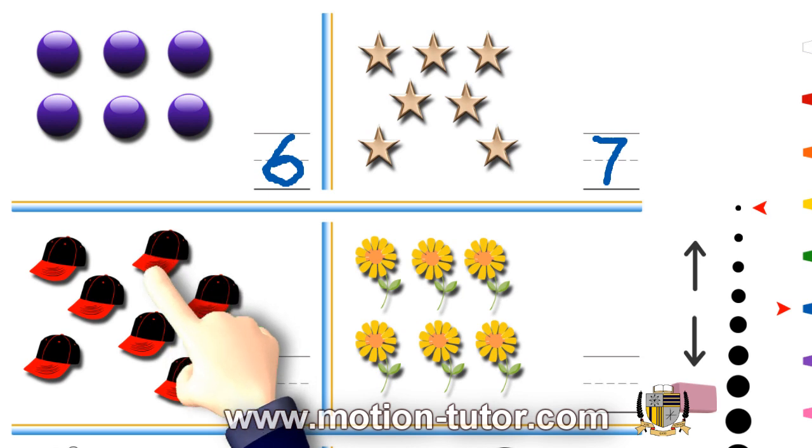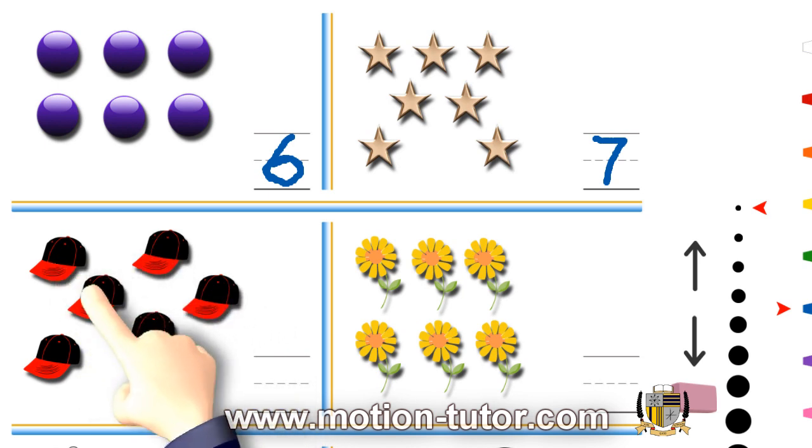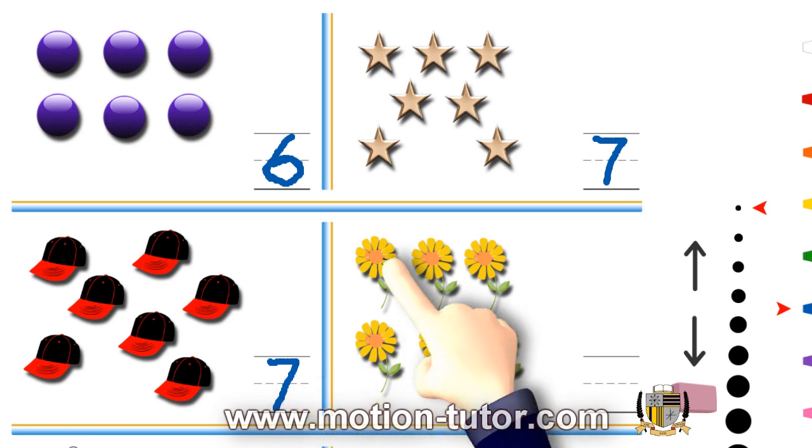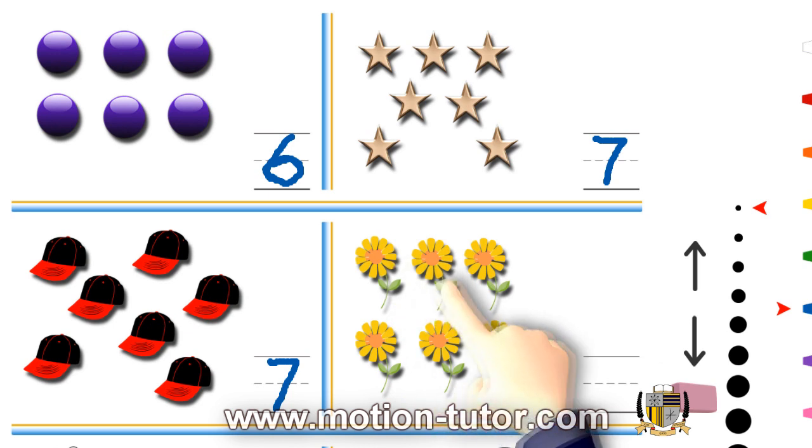How about these baseball caps? 1, 2, 3, 4, 5, 6, 7. 7 baseball caps. What about these flowers? 1, 2, 3, 4, 5, 6. And we write the 6.